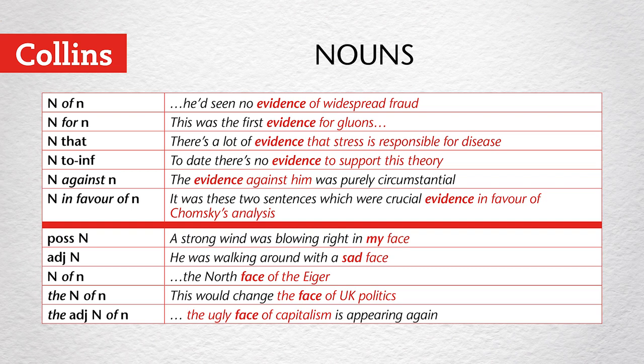When we turn to nouns, we're going to look at two nouns: the noun evidence and the noun face. Evidence is followed by the preposition of — evidence of widespread fraud — or the preposition for — evidence for gluons.